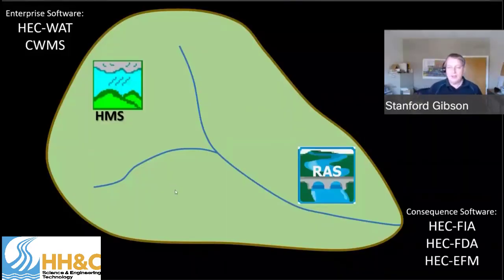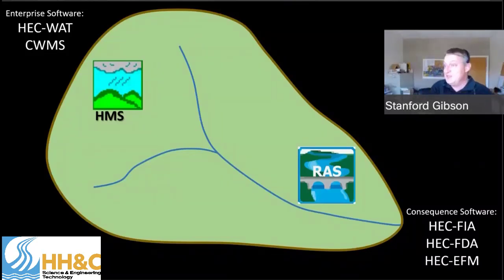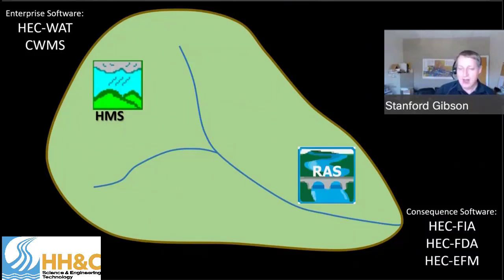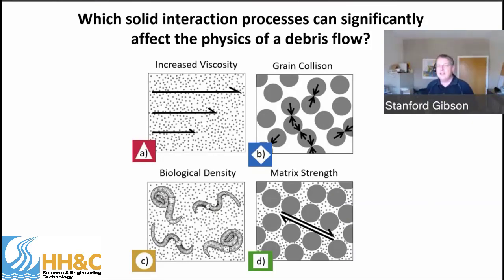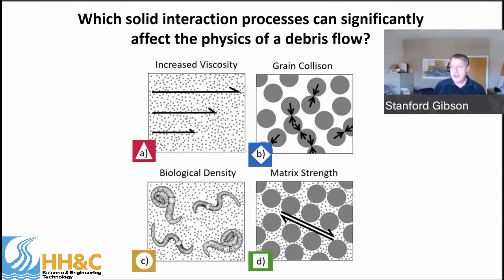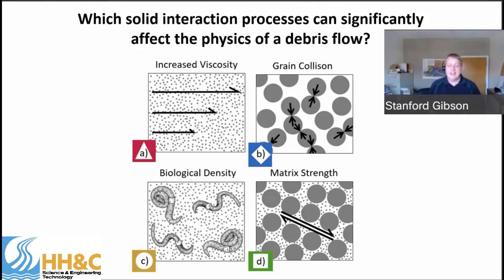We just did HMS, and now we know the sediment load — or at least plus or minus 50% — and we can compute a concentration. Now we want to put it in RAS and do some hydraulics. The first question is: which solid interaction processes can significantly affect the physics of a debris flow? You can choose as many as you'd like: A, increased viscosity; B, grain collision; C, biological density; D, matrix strength.